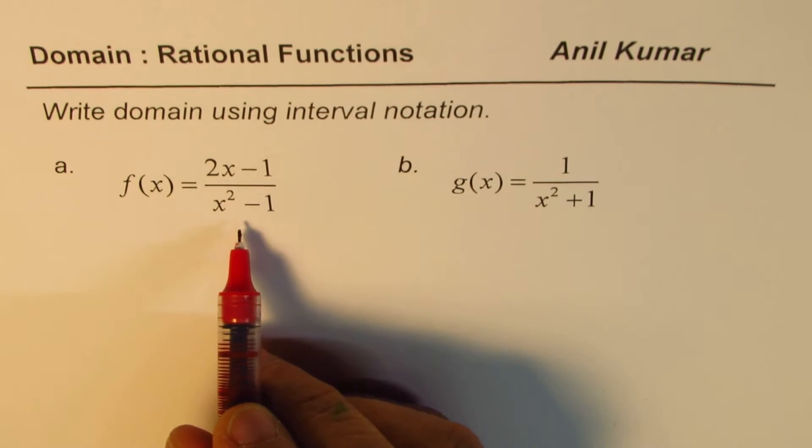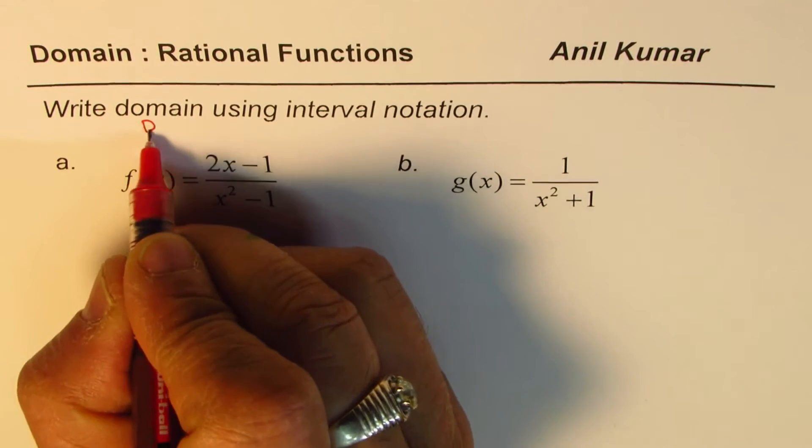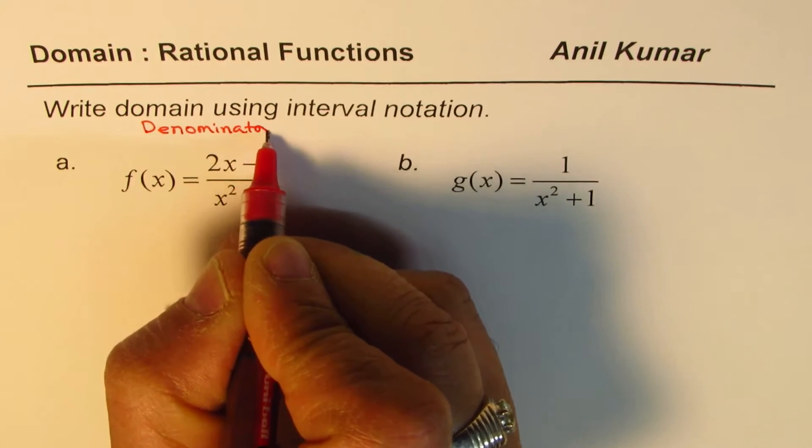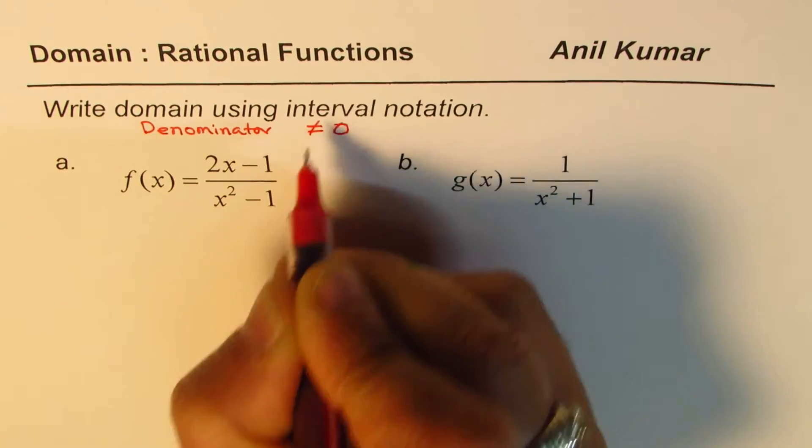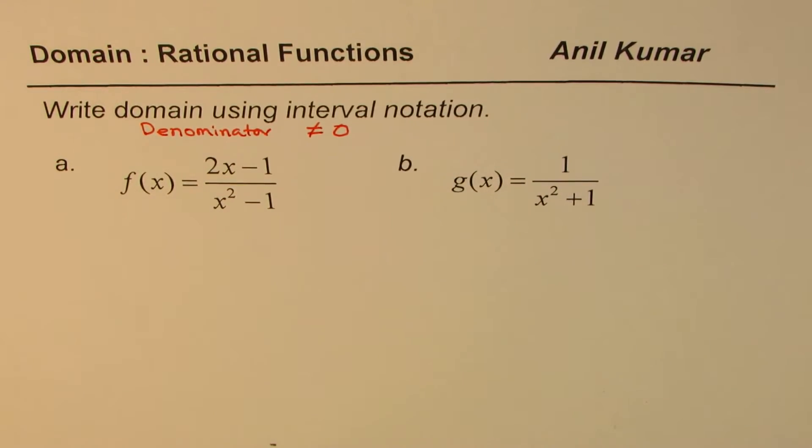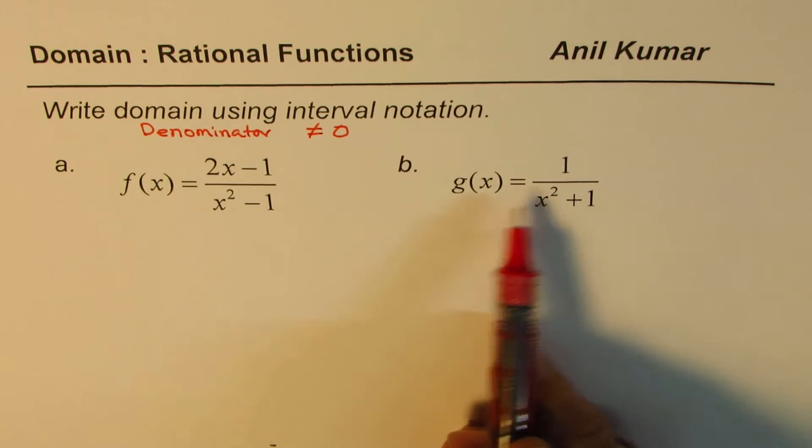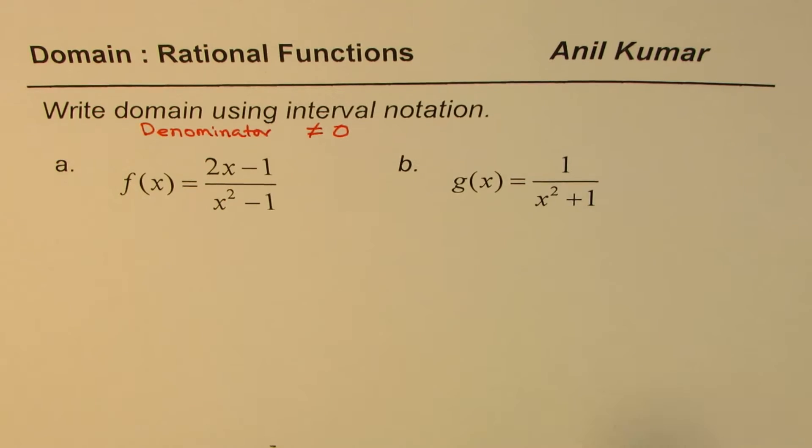Whenever we have a rational function, we cannot divide by 0. So the concept here is that denominator should not be equal to 0. That's the concept. Now, so we need to analyze the denominator in these cases whenever we're talking about rational functions.